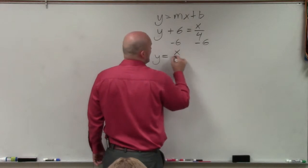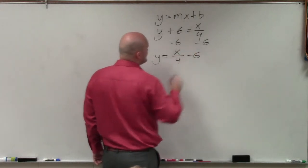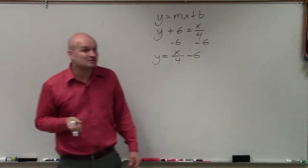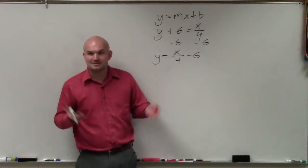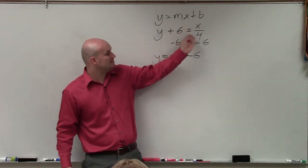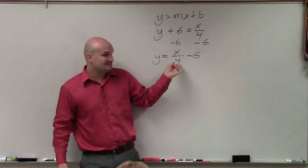Therefore, I have the form y equals x over 4 minus 6. Now, this still might get some students confused because you think of m as what's being multiplied by the x. And you don't really see a number being multiplied by x. You see a number being divided by x.